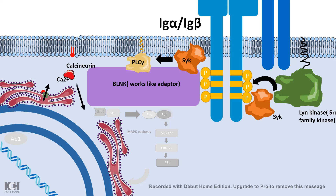The increase in calcium level is sensed by calcineurin, which is a phosphatase. Calcineurin can dephosphorylate NFAT, which is normally restricted to the cytoplasm. Upon dephosphorylation, NFAT is translocated into the nucleus, giving rise to gene transcription. In this calcium-dependent way, a variety of gene transcription networks are activated upon antigen binding. This is a very important function of B cell receptor signaling.